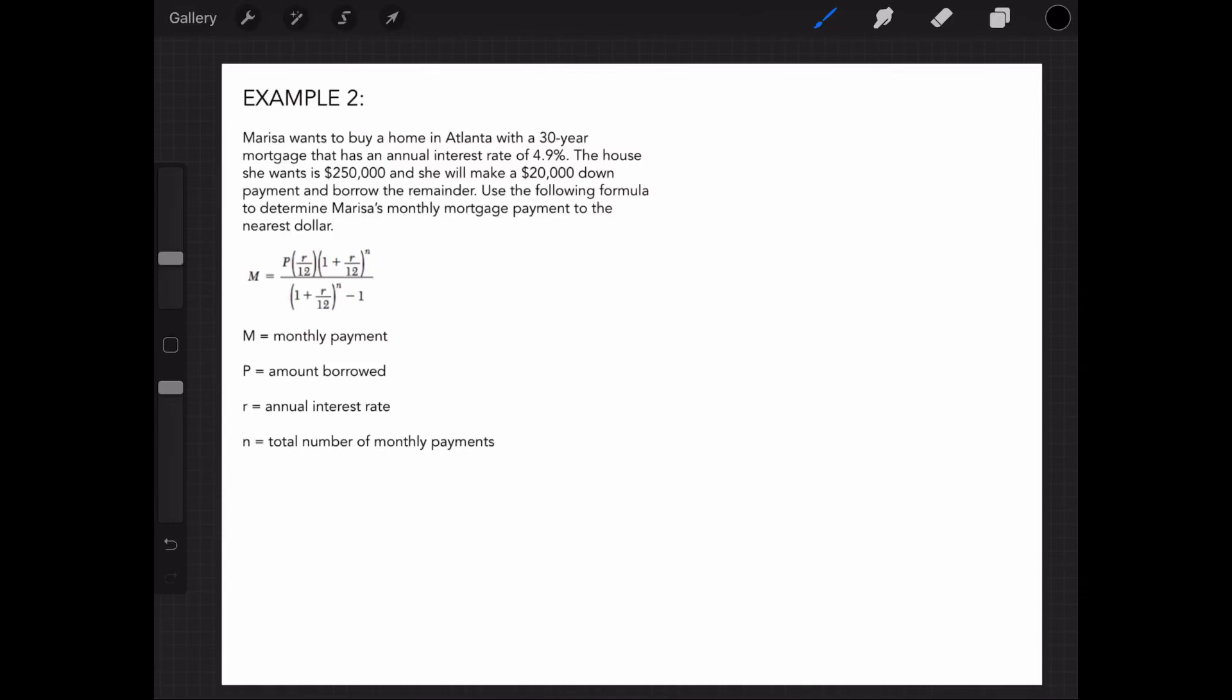Marissa wants to buy a home in Atlanta with a 30-year mortgage that has an annual interest rate of 4.9%. The house she wants is $250,000, and she'll make a $20,000 down payment and borrow the remainder. Use the following formula to determine Marissa's monthly mortgage payment to the nearest dollar. Then, we are given the formula and what each variable is.